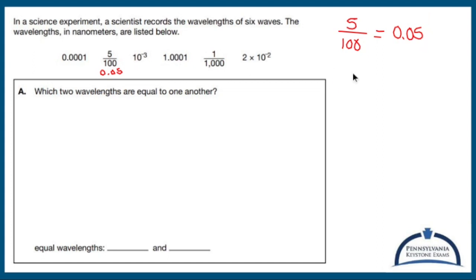Next, 10 to the negative third can also be written as one over 10 to the third, which is one over 10 times 10, 100 times 10, 1,000. So I have one one-thousandth. That's one-tenth, one-hundredth, one one-thousandth, which looks like 0.001.